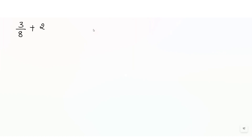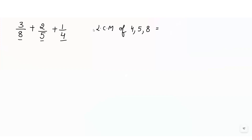For example, 3 by 8 plus 2 by 5 plus 1 by 4. In these fractions you can see the denominators are different. To add the fractions or subtract the fractions, we have to make the denominator the same, and for that we need to find out what is the LCM, which is the lowest common multiple of the denominators. I already explained this in the previous video.